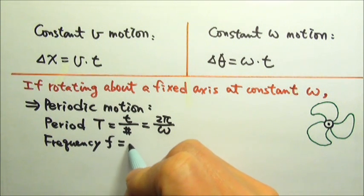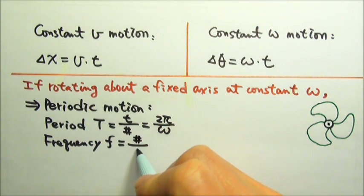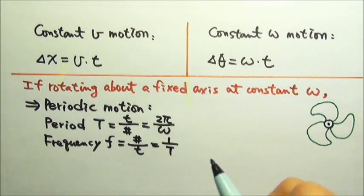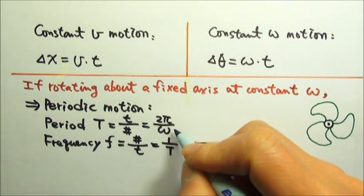And frequency, by definition, is the number of events per unit time, which is the inverse of the period. So it is omega divided by 2 pi.